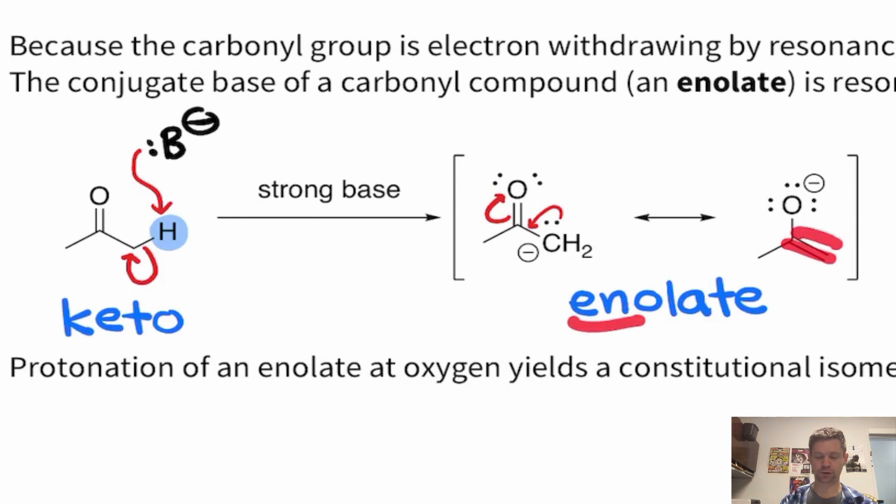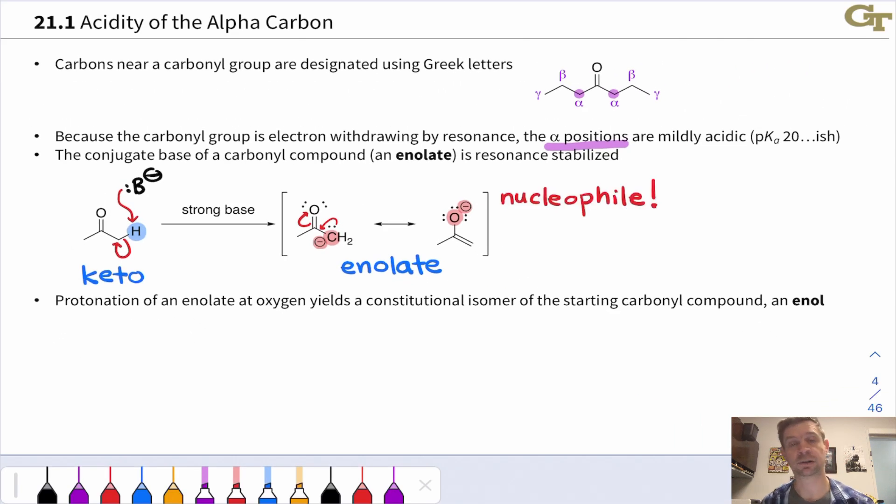And it shows us where the name enolate comes from. The en part of the name comes from the carbon-carbon double bond here. And the all-late part of the name comes from the negative charge on oxygen. So both resonance forms are completely valid, completely fine. This is probably the more significant resonance form in that there's probably more negative charge on the more electronegative oxygen atom. However, this second best resonance form points us to reactivity, specifically the reactivity of the alpha carbon. In the enolate, both that alpha carbon and the carbonyl oxygen are nucleophilic. And this is key to the reactivity of the enolate.